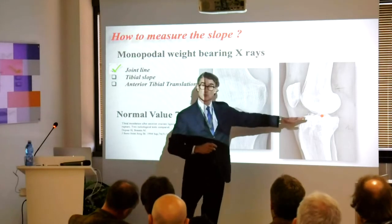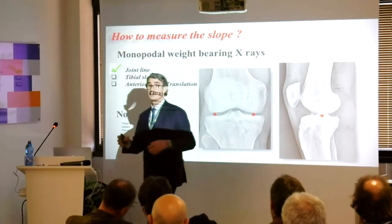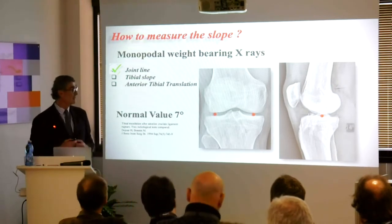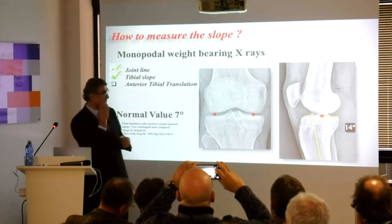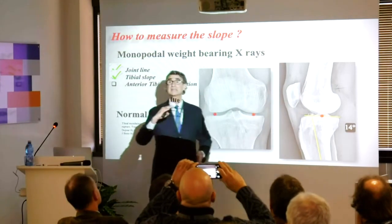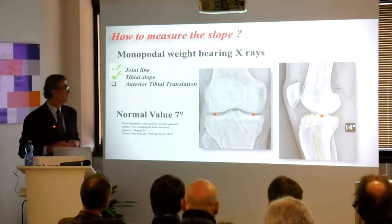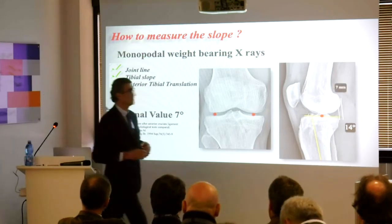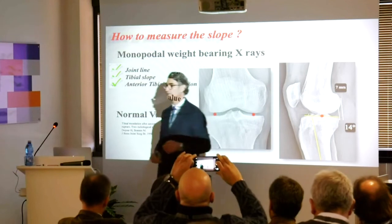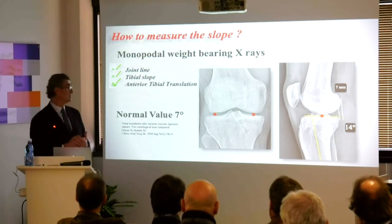To measure the tibial slope, you take the shaft and the midline of the tibial plateau, because on X-rays you can only measure the midline tibial plateau. You can also measure the anterior tibial translation — the distance between the posterior tibial plateau and the posterior medial femoral condyle — and grade and quantify this anterior tibial translation.